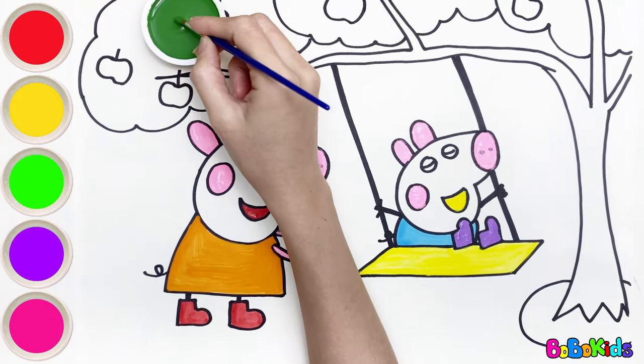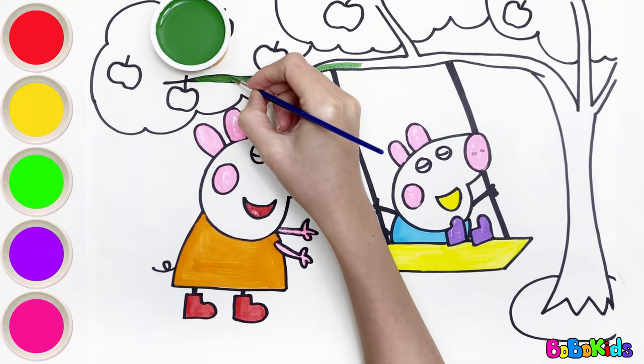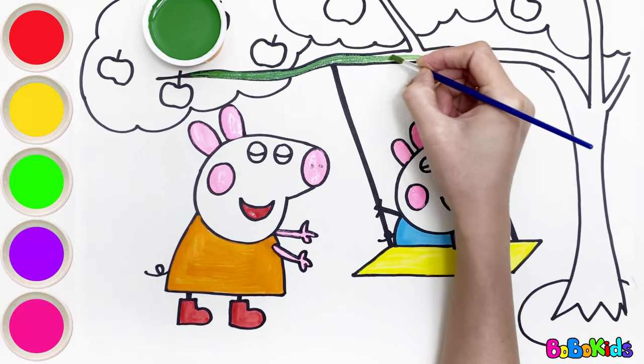Dark green color. Now, let's color the apple tree. The stem will be dark green.